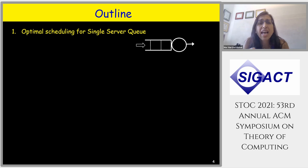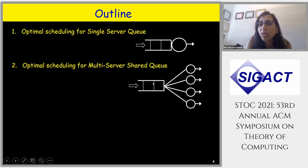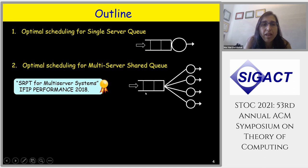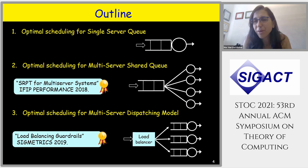The outline of this talk: I'll start with a warmup on optimal scheduling for a single server queue. Then we'll move to a multi-server queue with a shared queue over K servers — the topic of one paper. Finally, we'll look at a dispatching model where jobs arrive and must immediately be dispatched to one of the queues — the topic of the other paper.